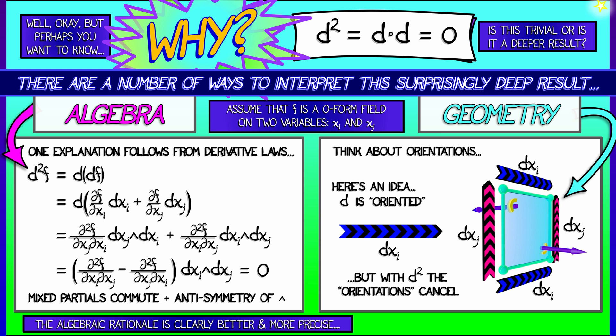But as with all deep ideas in mathematics, there are multiple ways to think about it. And I encourage you to think about the exterior derivative. The important thing to remember is that d squared is zero.